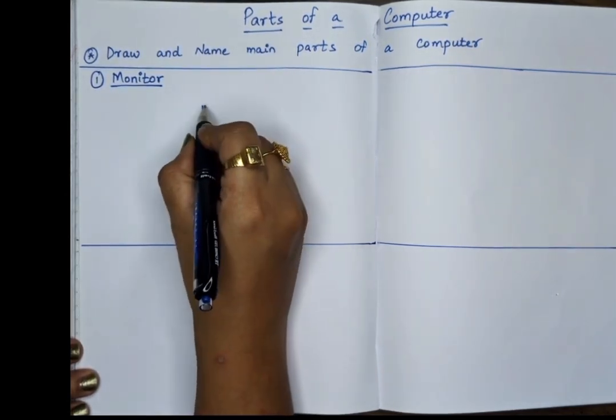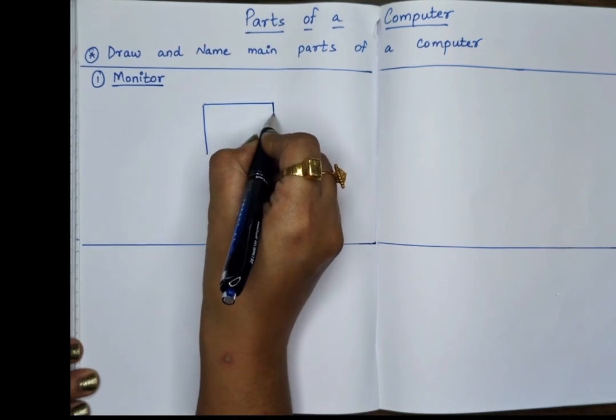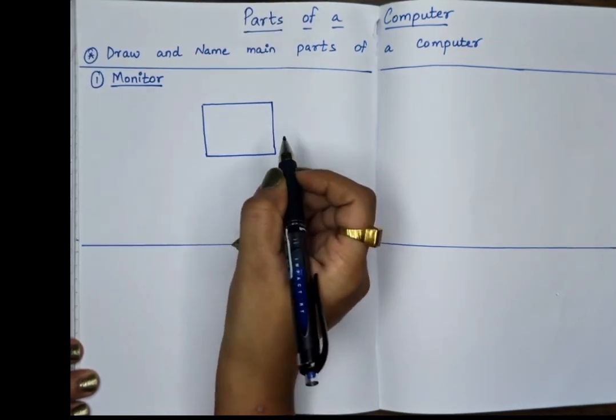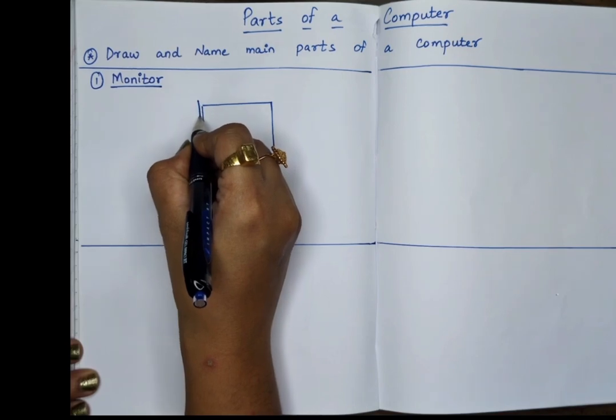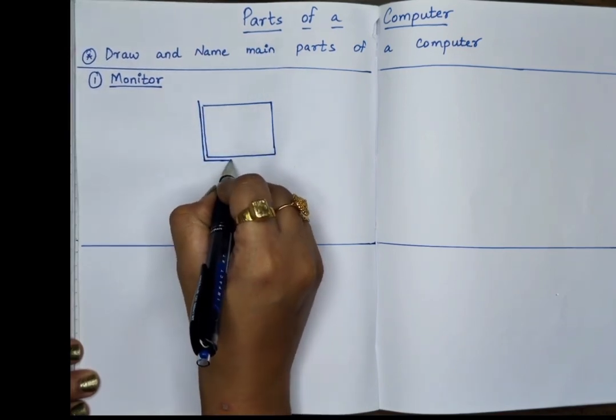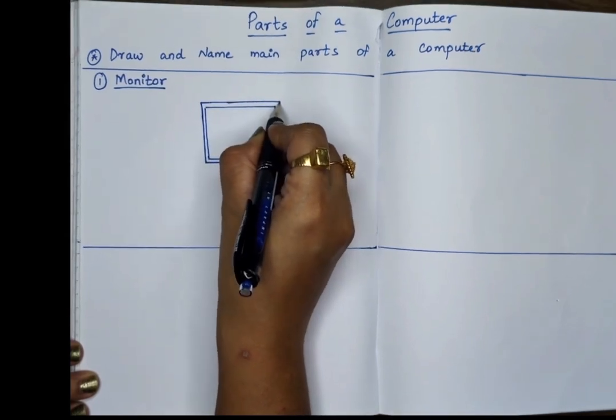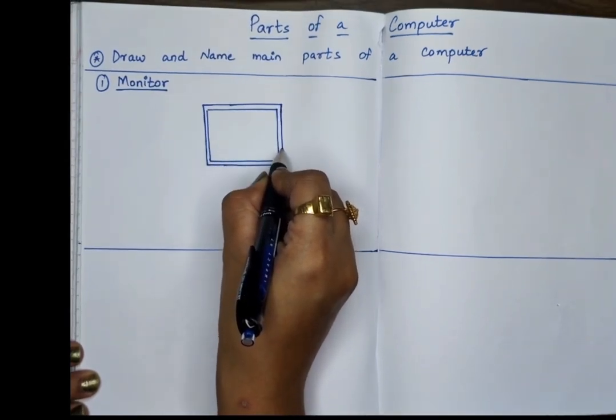First part, monitor. The monitor looks just like a TV screen. We can see pictures, words and even cartoons on it. It shows all the work we do on the computer.